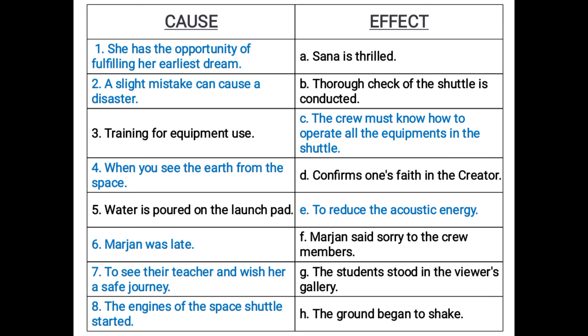Number five: water is poured on the launch pad. Why is it poured on the launch pad? It is poured to reduce the acoustic energy — means the energy in the form of sound. Number six: Marjan said sorry to the crew members. Why? The cause is that Marjan was late.